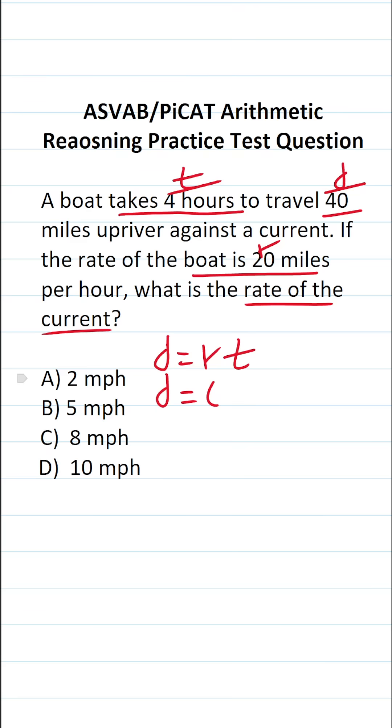If the boat is traveling upriver against a current, how is that current affecting the rate of the boat? It's actually slowing the rate of the boat down. So algebraically, that's going to be R minus C, where C is the letter variable I picked to represent the rate of the current, times T.